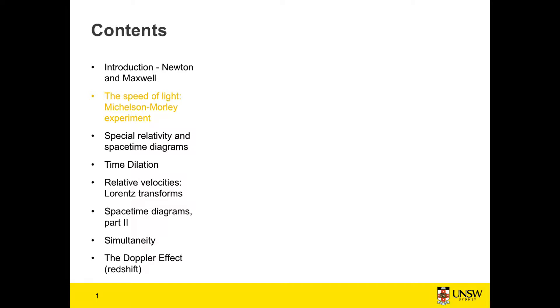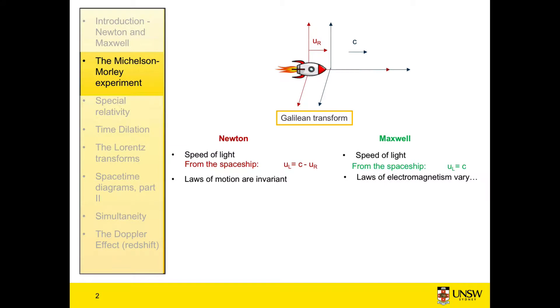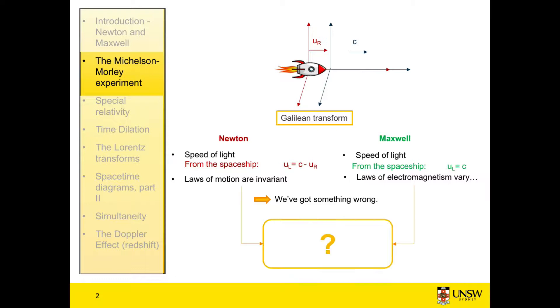Welcome to the second video in the special relativity topic. In this video we'll be looking at the Michelson-Morley experiment. Before we begin, just a short recap on where we were. We'd found that both Newton and Maxwell couldn't be right using the standard Galilean transform, so we came to the conclusion that something was wrong with the current theories and laws of physics, and we needed a new explanation.